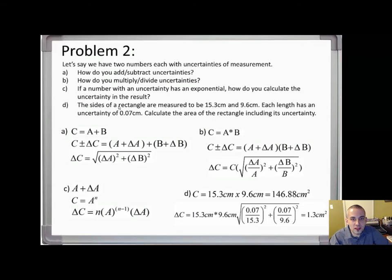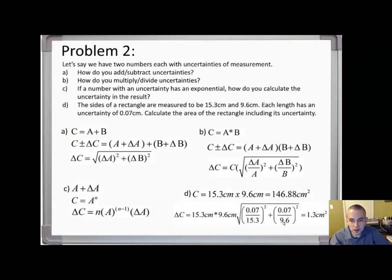A quick example for part (d): the sides of a rectangle are measured as 15.3 and 9.6, each with an uncertainty of 0.07. Calculate the area including its uncertainty. The area is length times width. To calculate the uncertainty of the multiplication, take the square root of the uncertainty over the value squared for each dimension, then apply order of operations from there.